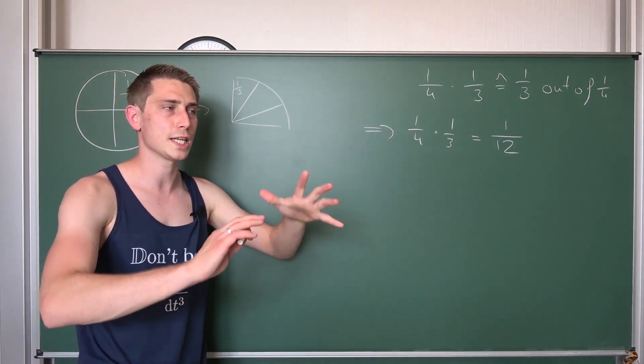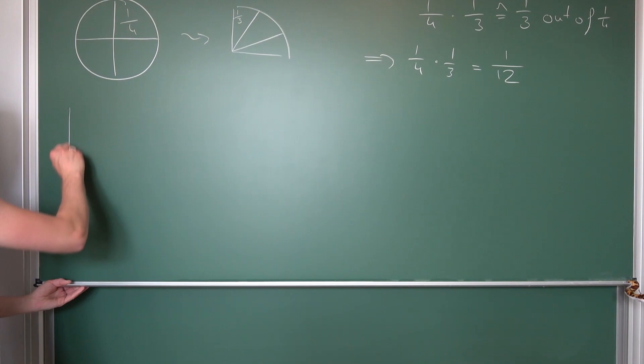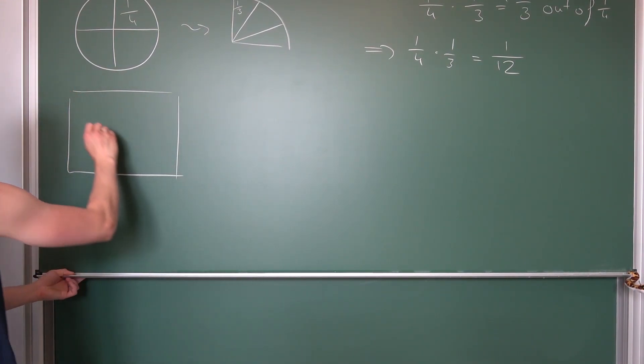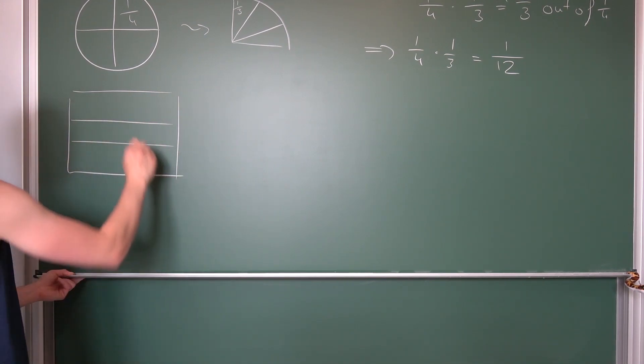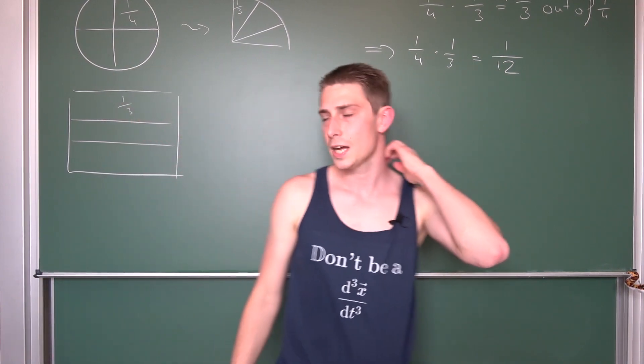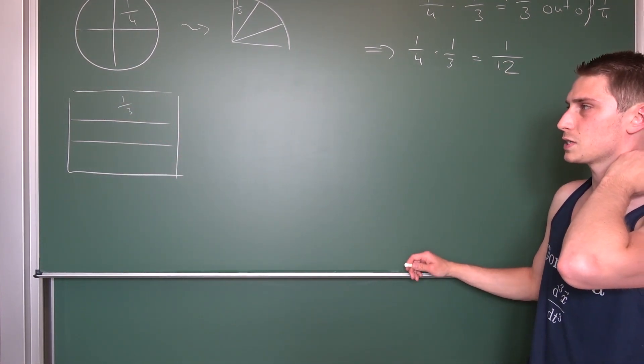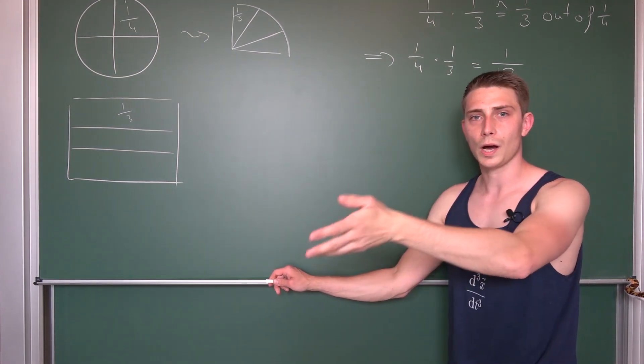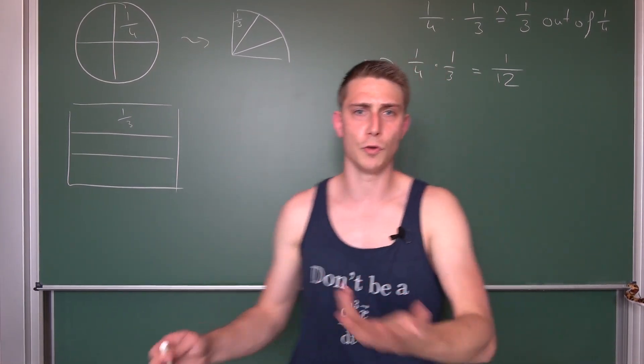Let us do one more such that you gain a bit more intuition about that. Let us take a look at a square and we are going to divide the square up into thirds yet again. We are going to partition it into thirds. And now we are going to ask ourselves the question, what is one half out of a third, for example.